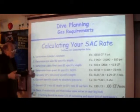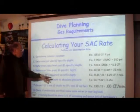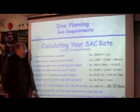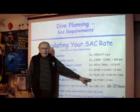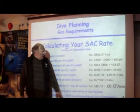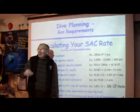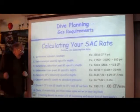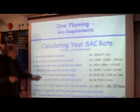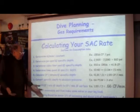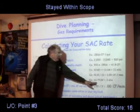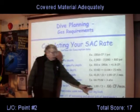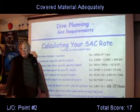Then let's convert the specific depth to absolute pressure. You know from your open water course that 66 feet of sea water is 3 atmospheres absolute. Now, let's convert the cubic feet per minute at depth to cubic feet per minute at the surface: 1.99 divided by 3 equals 0.66 cubic feet per minute.